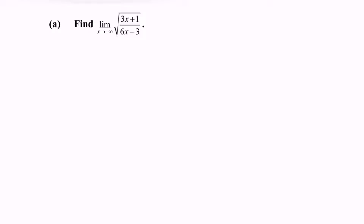Find the limit when x approaches negative infinity for the function: square root of (3x + 1) over (6x - 3). If we substitute negative infinity, we obtain square root of negative infinity over negative infinity, which is an indeterminate form.